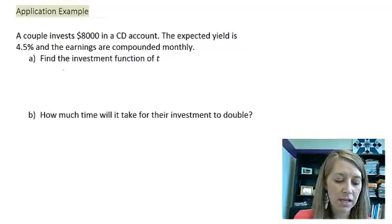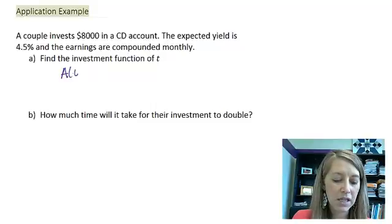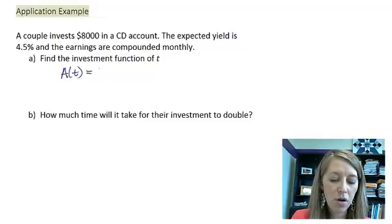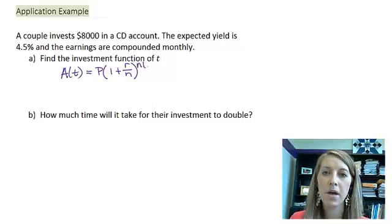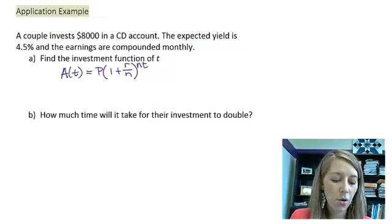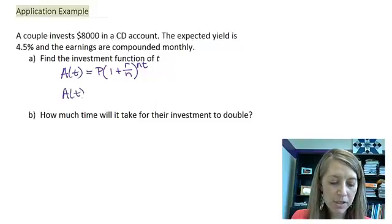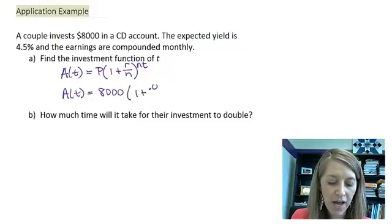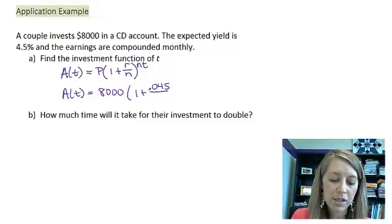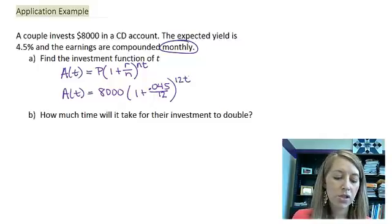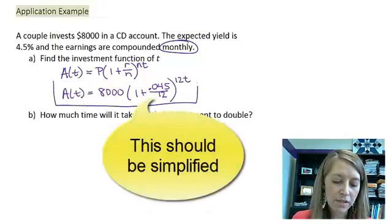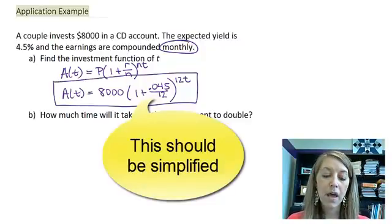We know our investment function is an A function for the amount as a function of time. In general, our function is the principal times 1 plus the rate over the number of times it's compounded to the number of times it's compounded times the amount of time that it is invested. In this specific example, our principal is $8,000, one plus our rate is 0.045, the number of times it's compounded is 12 because it's compounded monthly, and that is to the 12t power. This is just a review of something we learned back in the exponential function section.